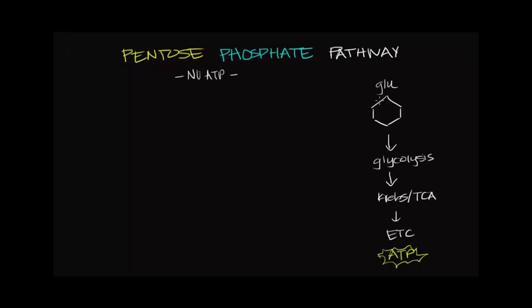So it turns out that as glucose begins to go through glycolysis, some of it is shunted away to become the pentose phosphate pathway.